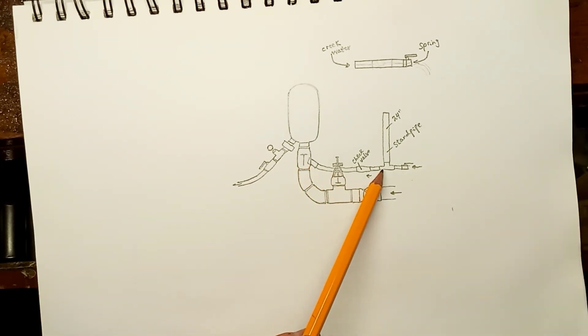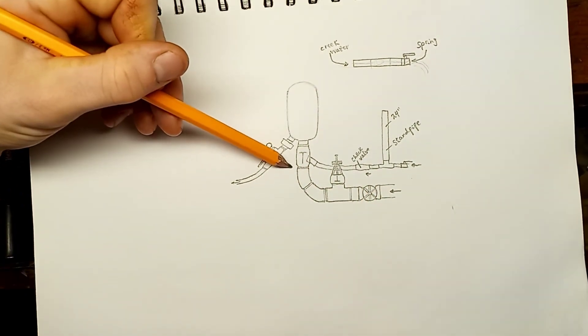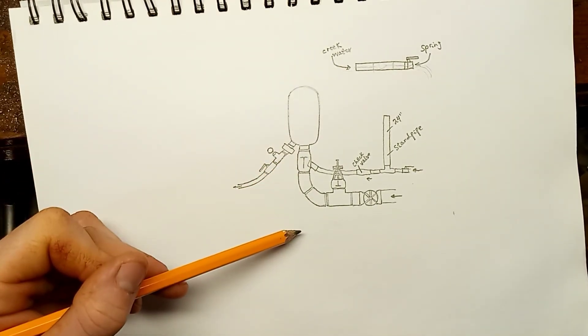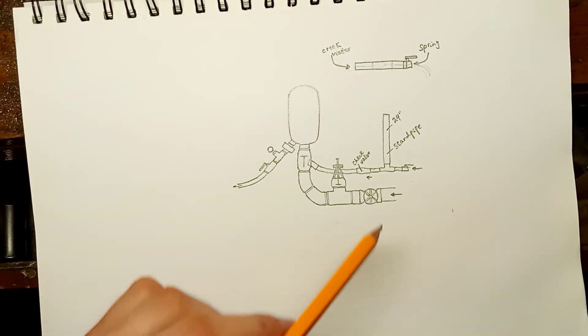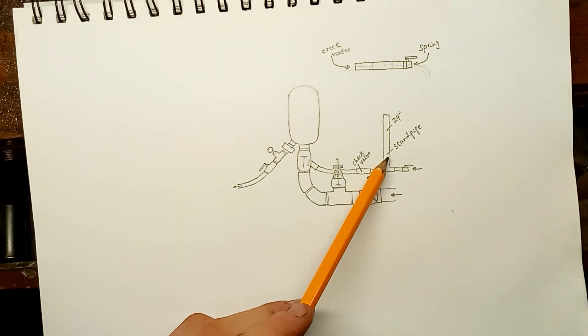You can run your spring water supply line in from any direction. You can run it in from this side, you can run it from the front, the back. It can come in at any direction. It doesn't have to be the same direction as your supply for the creek or dirty water. It doesn't have to be any of that. It can come in from any direction. And please, if you want to build one of these pumps, please just follow these instructions as closely as possible. It took me a long time to hunt this information down.